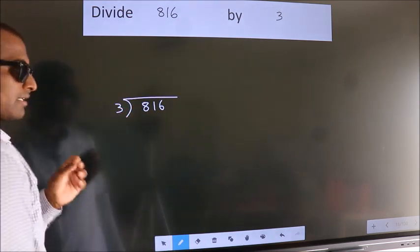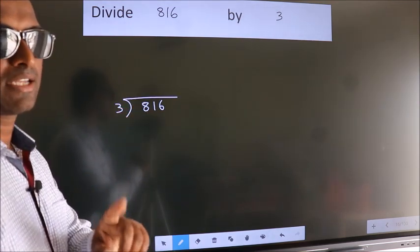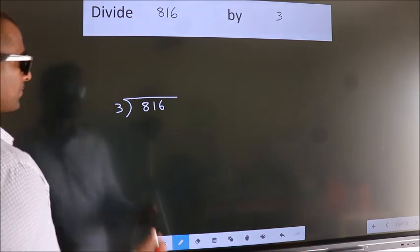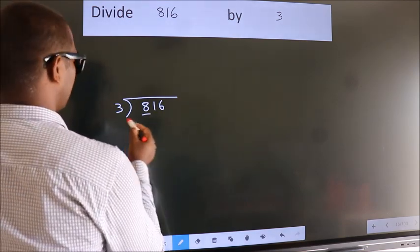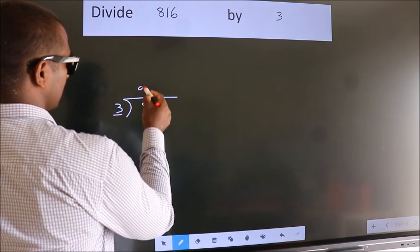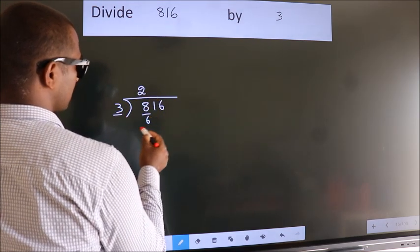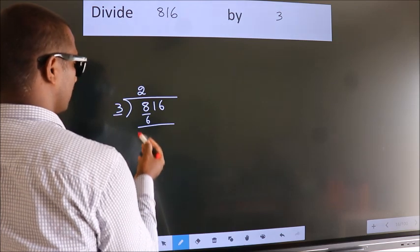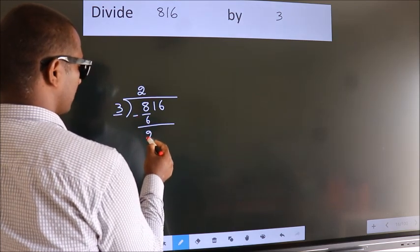This is your step 1. Next, here we have 8, here 3. A number close to 8 in 3 table is 3 2s, 6. Now, we should subtract. We get 2.